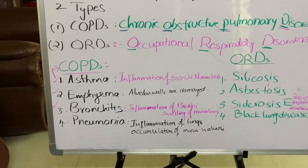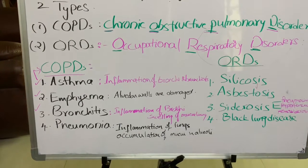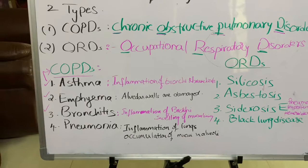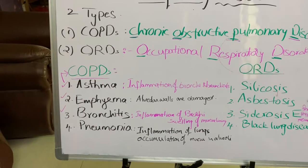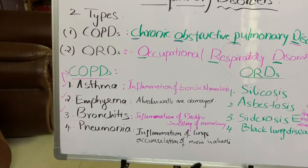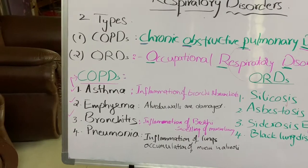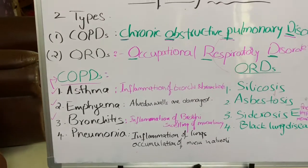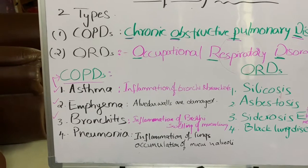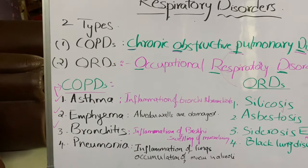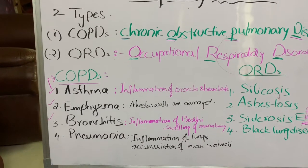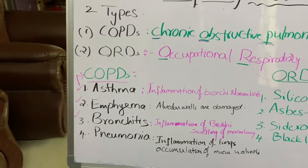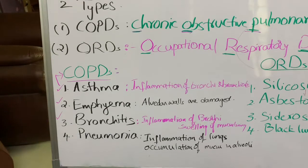COPDs are of three types: asthma, emphysema, and bronchitis. Asthma is a condition in which inflammation of the bronchi and bronchioles occurs. Asthma is mainly due to allergens — some people may be allergic to pollen grains, food, smells, paints, soot, or dust. These allergens cause the release of histamine and other inflammatory substances, causing inflammation of bronchi and bronchioles. The symptoms of asthma are chronic cough and spasm of smooth muscles in the bronchi and bronchioles.